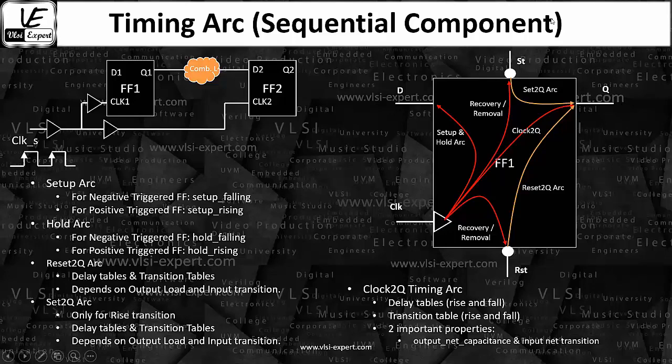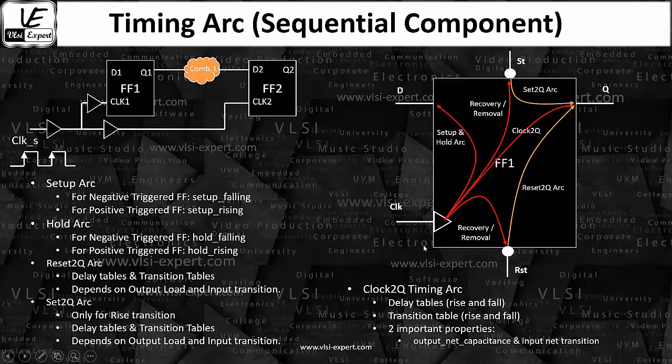The clock and the set or the clock and the reset, both are input pins, but the timing arc we usually say is recovery removal timing arc. When we are talking about clock to Q, then whatever we have discussed in combinational logic, one is the input another is the output, that is a clock to Q output. Similarly, set to Q and reset to Q, there are two other timing arcs between input and output pin.